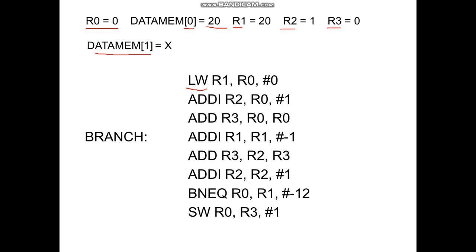The first instruction is a load instruction. Since we need to take the value from the data memory to the register bank R1, we use the load instruction. The destination register is R1 and data memory address is 0. To represent address 0, we take the value R0 and add it with hash 0. So 0 plus 0 becomes 0, and the data from data memory location 0 is loaded to register R1.